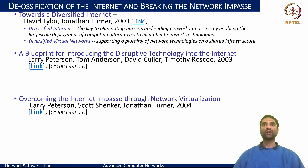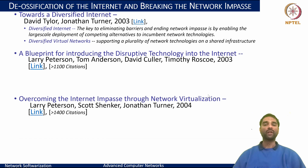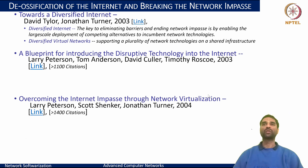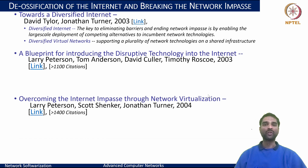To this extent, the authors proposed a diversified internet, through which the support for multiple meta-networks on a shared network infrastructure can be realized. This would help eliminate any barriers and even end the network impasse, so that it could enable the means for large-scale deployment of competing alternatives. In this way, this diversified internet necessitated the need for virtualization, wherein the authors advocated that virtualization is not just a tool to break the impasse, but also to affect pluralist networking technologies — that is, to enable newer players to work, compete, and bring innovations on board.